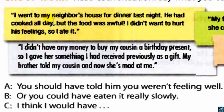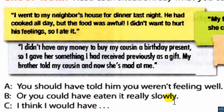For the dinner situation: 'You should have told them you weren't feeling well,' or 'You could have eaten it really slowly.' Think of the best answer. For situation two: 'I didn't have any money to buy my cousin a birthday present, so I gave her something I had received as a gift previously.'